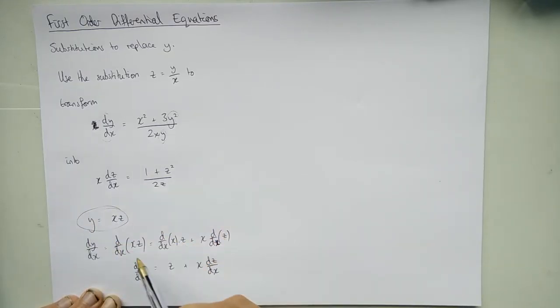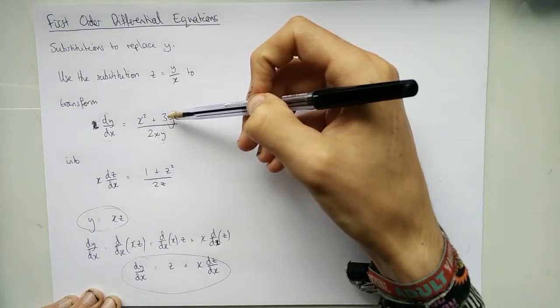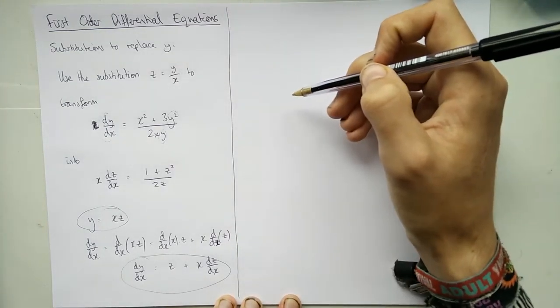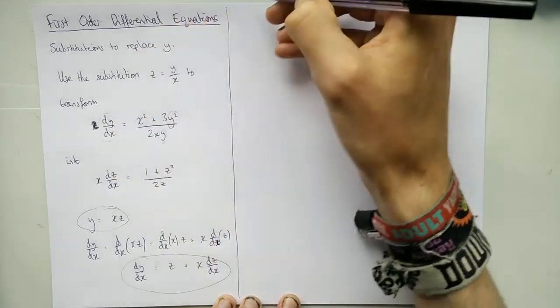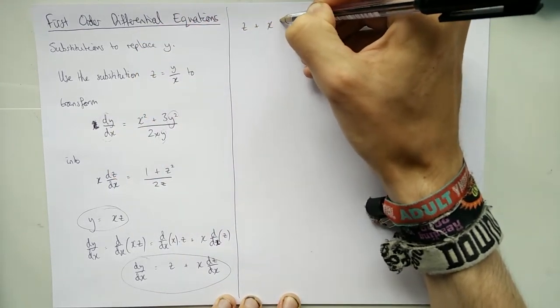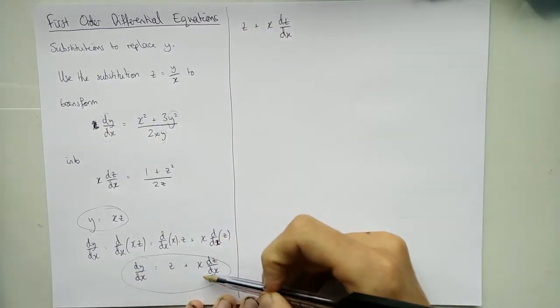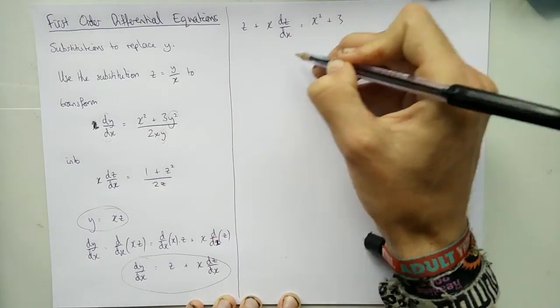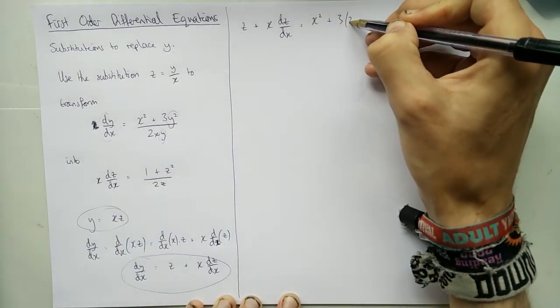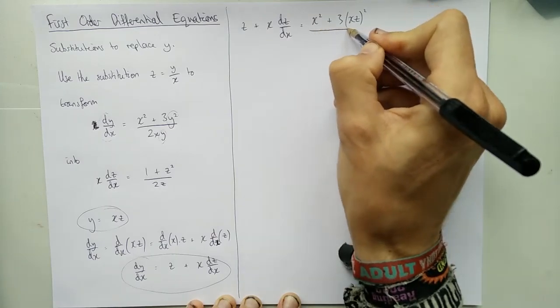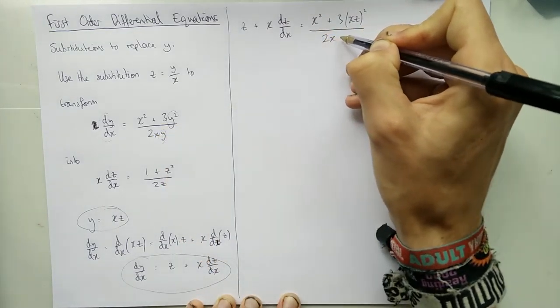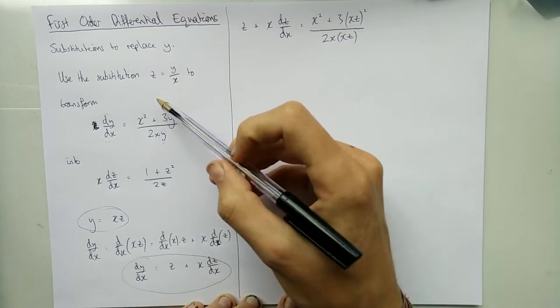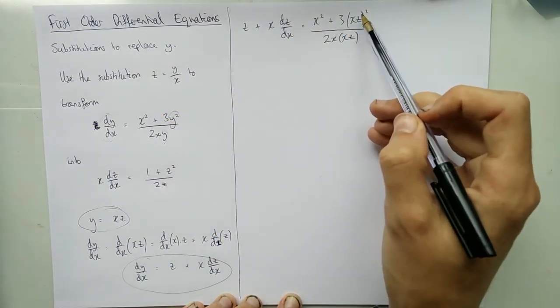We can now use these two things to substitute back into this equation and hopefully rearrange it somehow to get this. So this dy/dx becomes z plus x dz/dx. I've just replaced that with what it's equal to. Over here we've got it's equal to x squared plus 3y squared. So y is xz, squared because it's the y squared. And that's all divided by 2xy. So 2x and y is xz. So we're going to take this equation here and substitute.